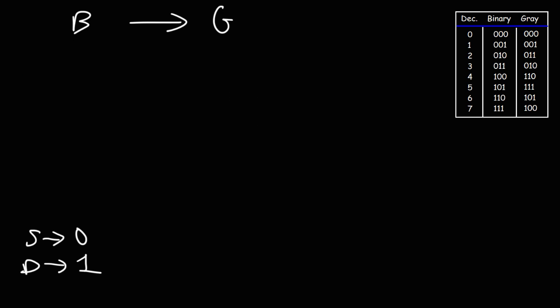Go ahead and try these two examples. Convert the binary number 110111 into gray code. Also try this one: 10101101. Convert both binary numbers into gray code. Feel free to pause the video and try this for the sake of practice.